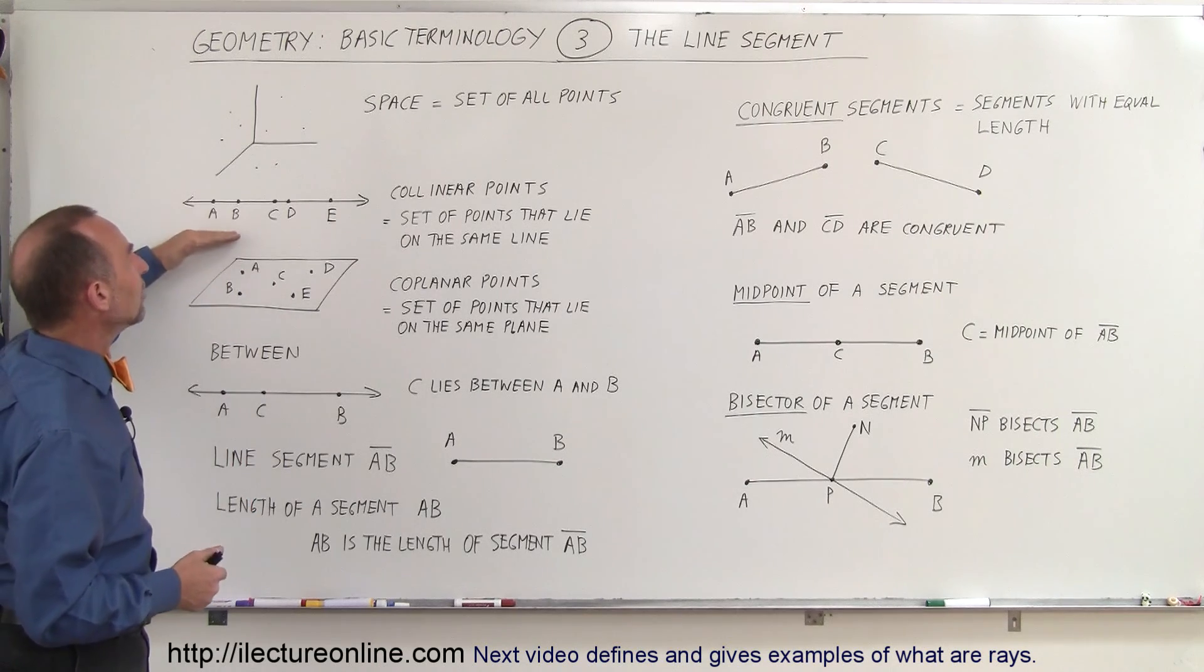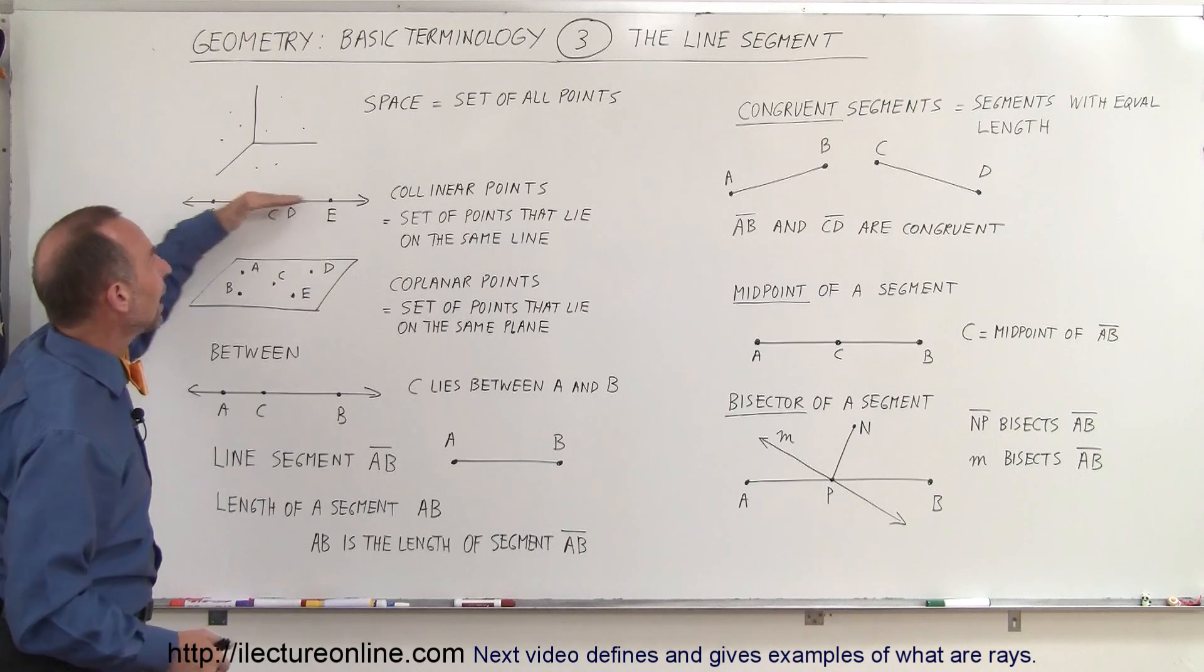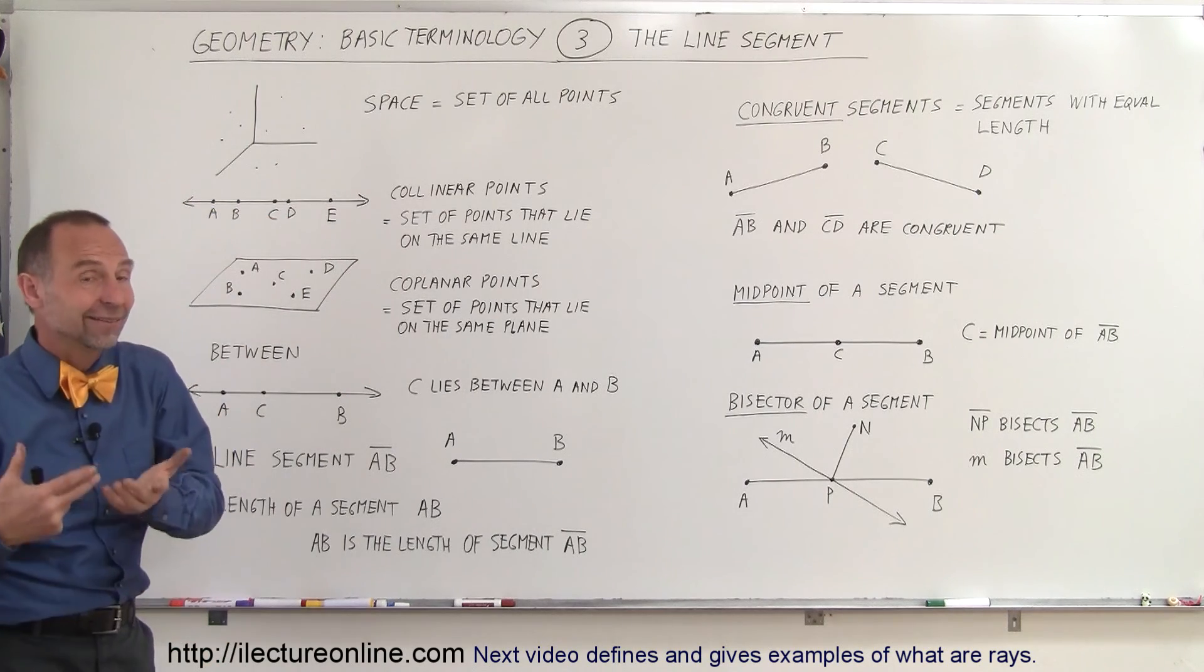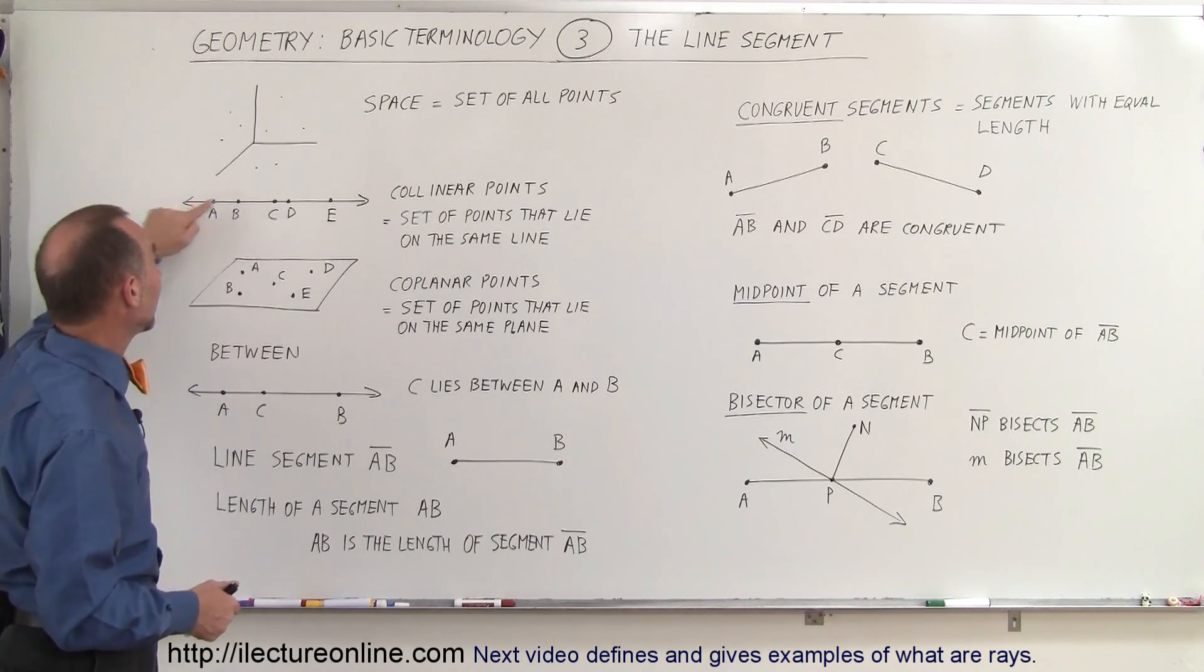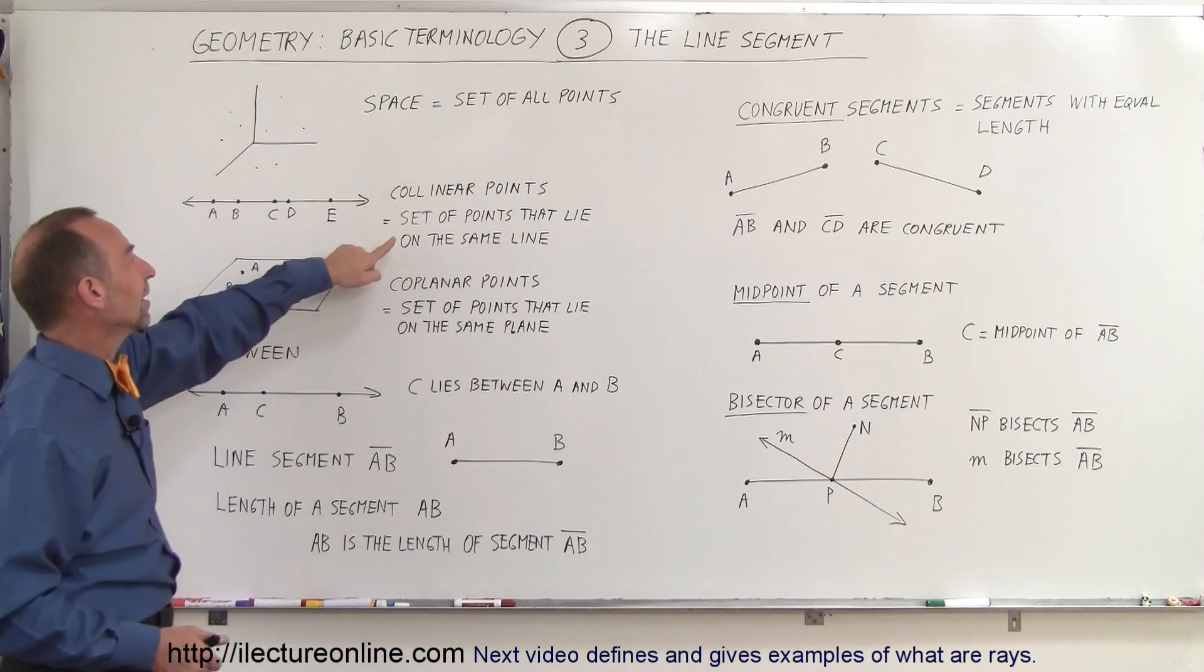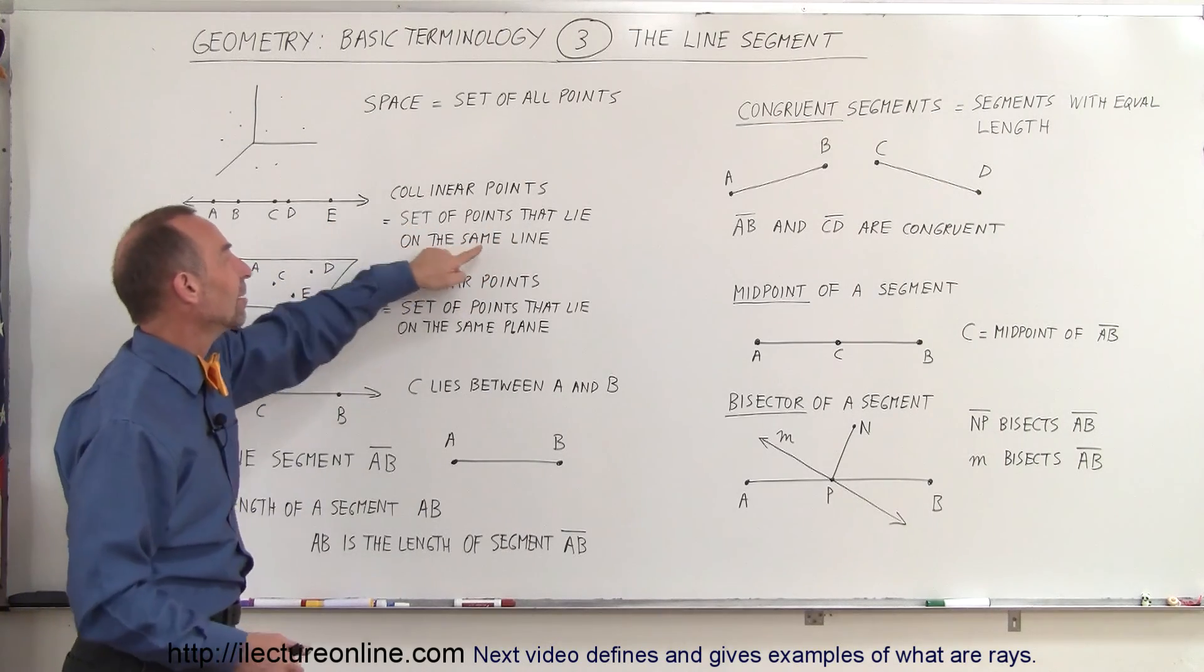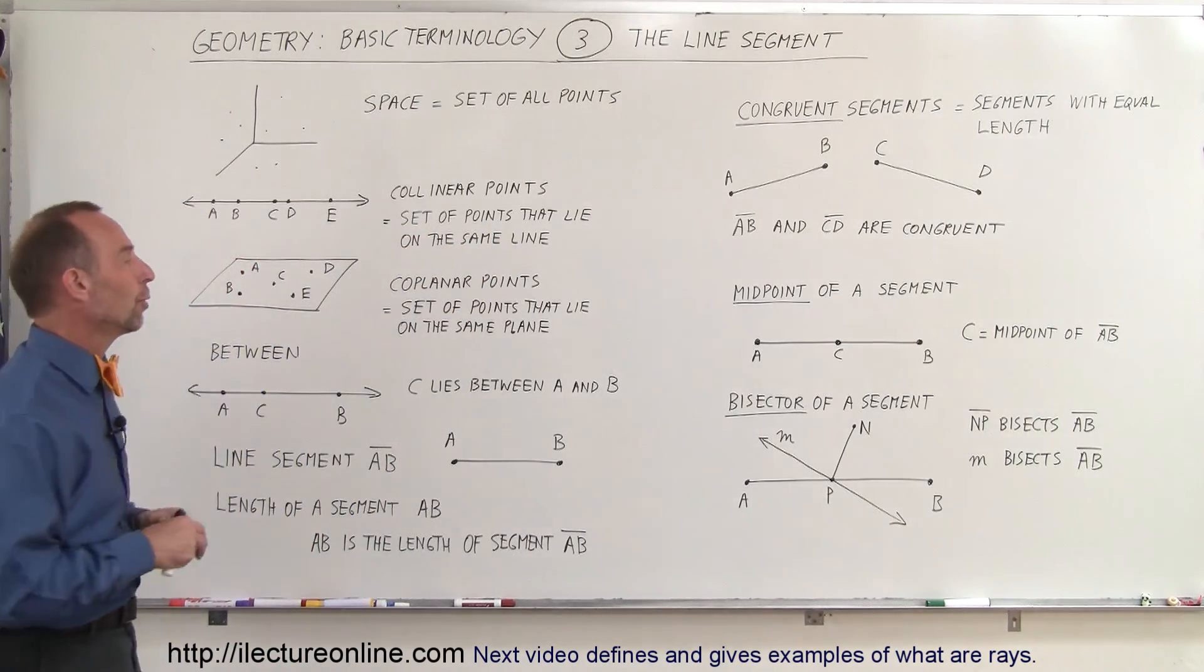Points that are collinear, or collinear points, are points that are on the same line or sometimes on the same line segment. But in this case you can see the arrow, so therefore it's a line. So the set of points that lie on the same line are called collinear points.